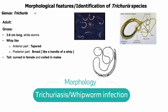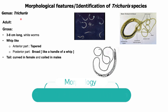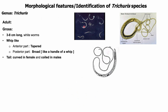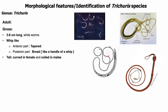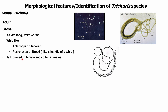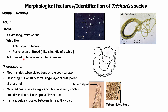Morphological features of Trichuris species: adult Trichuris is white and around three to eight centimeters long. The anterior part of the worm is tapered and whip-like, and the posterior part is broad like a handle of a whip — therefore the parasite is called whipworm. The female tail is curved and the male tail is coiled. Microscopically, the parasite possesses a mouth stylet and tuberculated bands on the body surface. The esophagus is capillary form, with a single layer of cells.